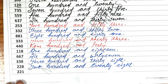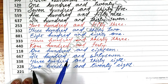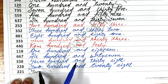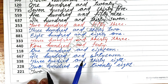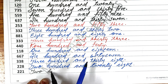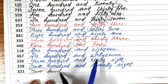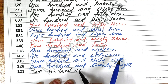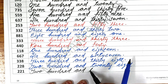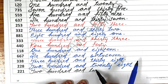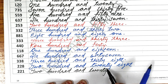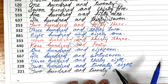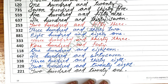Now the next one is two hundred and twenty-one. Write two hundred — T-W-O — H-U-N-D-R-E-D — two hundred and twenty — T-W-E-N-T-Y — twenty-one — O-N-E. Okay.